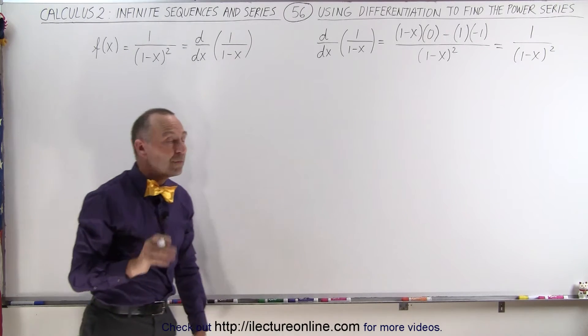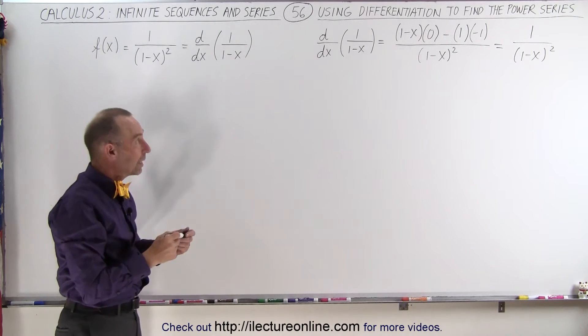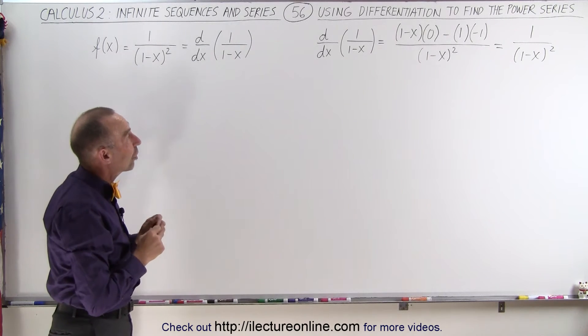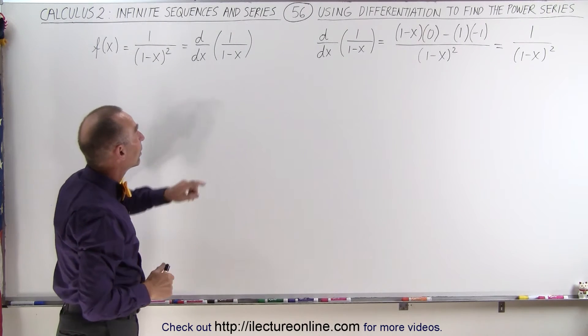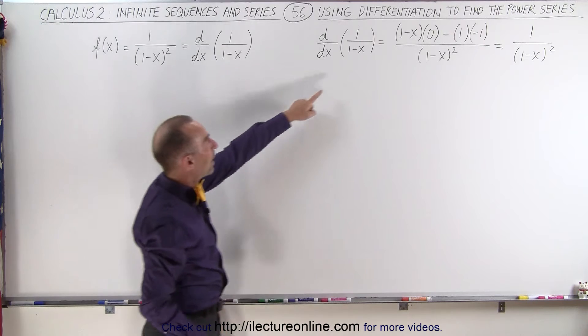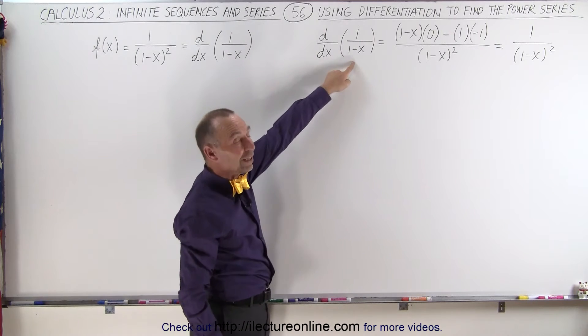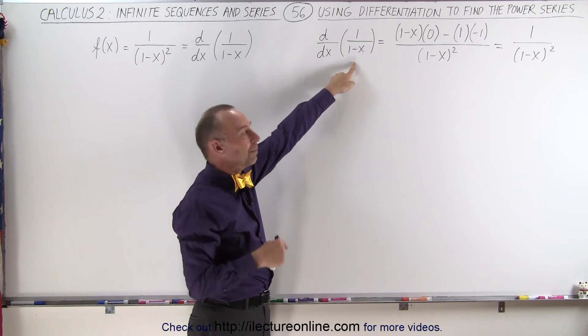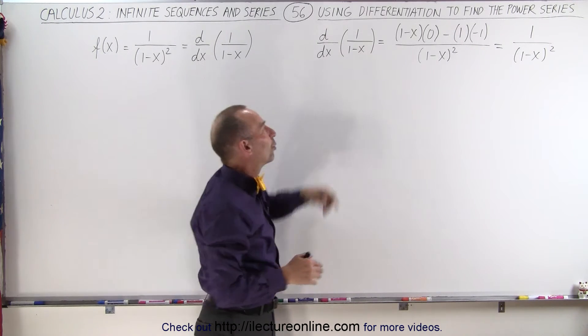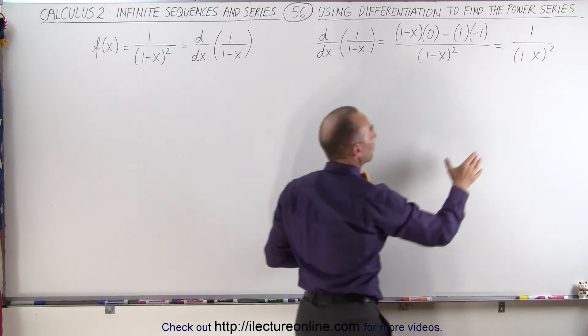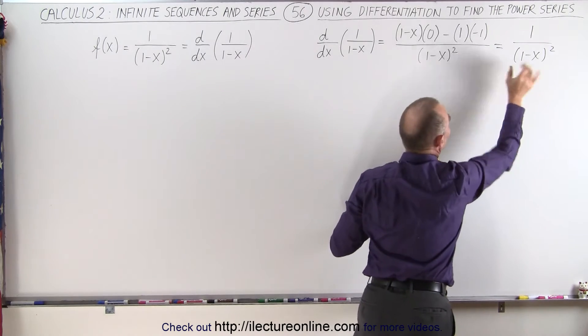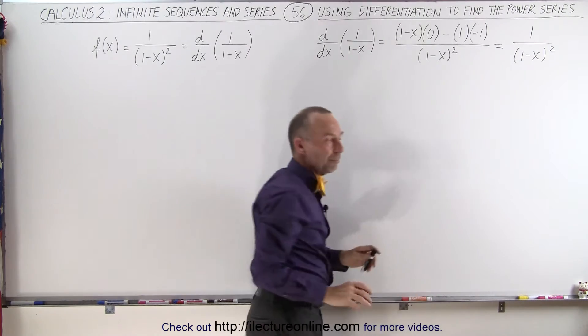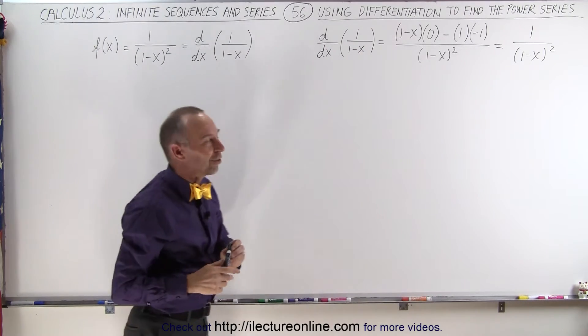Which means we can start with finding the power series of 1 over 1 minus x, then take the derivative of that power series, which will then give us the power series of 1 over 1 minus x squared. Let me show you what I just said.